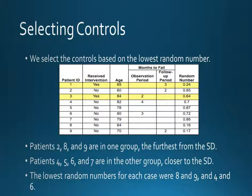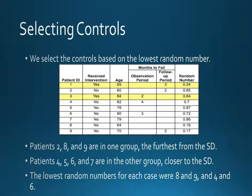Now that we have calculated the standard deviation, we can work on selecting controls. We select them based on the lowest random number, which is the last column in this chart. Patients 2, 8, and 9 are in one group, as their random number values are furthest from the standard deviation. Patients 4, 5, 6, and 7 are in the other group — they are closer to the standard deviation. The lowest random numbers for each case were 8 and 9, and 4 and 6.